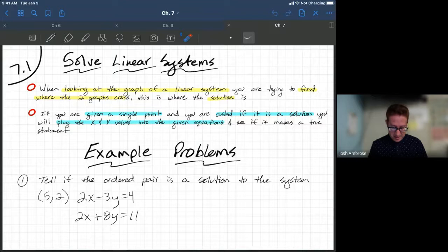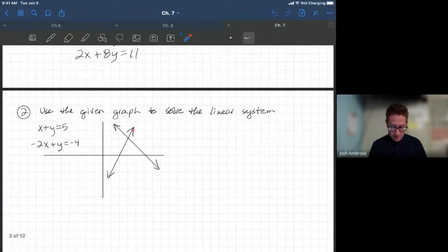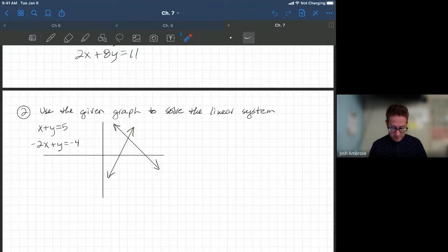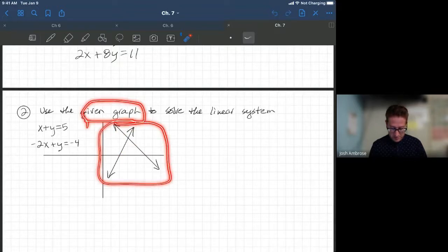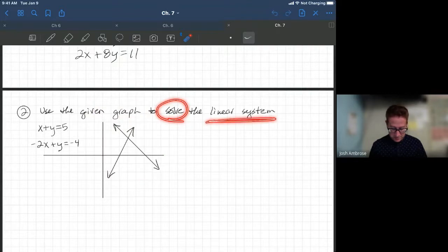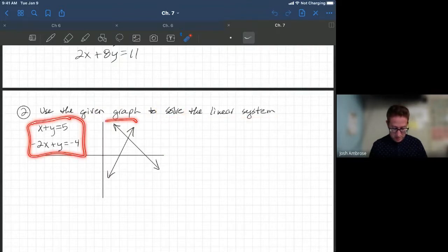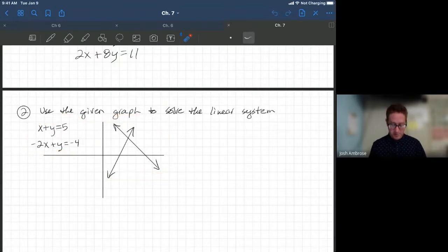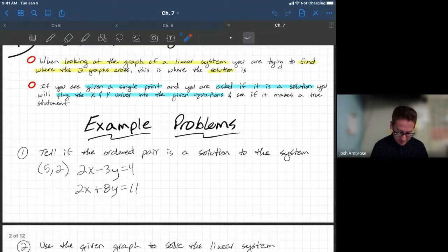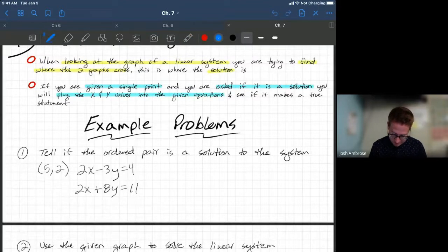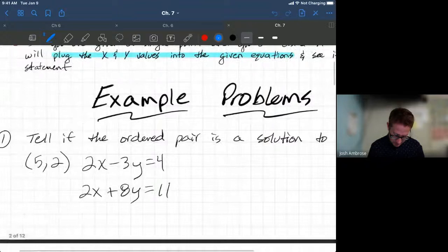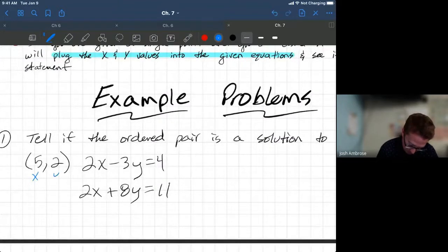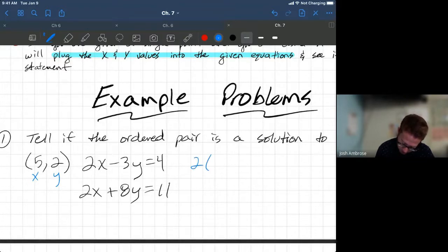All right, so that's the first example problem. We're going to go through that, and then the second example problem we're talking about is all about where do they cross. So use the given graph right here to solve the linear system. These equations, by the way, create these graphs. So that's all I'm proving here, is that these equations create these graphs, and where do they cross. So let's do it. Let's jump into these example problems. Zoom in a little bit here. So here's our x value, here's our y value. Let's plug them in and see if they create a true statement.